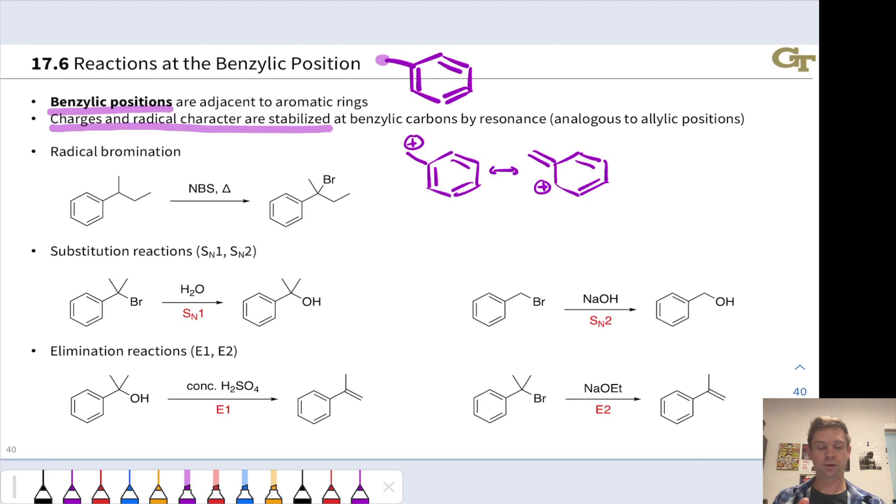Notice that ortho to that carbon and para to the position where the cationic carbon is linked are the positions where positive charge shows up in these resonance forms. We could add curved arrows to show the inner conversion of these resonance forms.